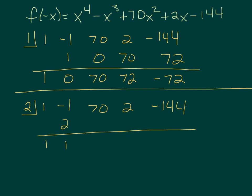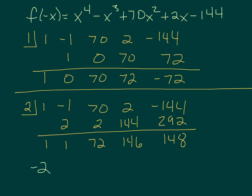Bring down and multiply, add, multiply, add, multiply, add, multiply, add, multiply, and add. Now we have all positives — they're all the same sign. The theorem states that when you do this for the function evaluated at negative x, the result corresponds to the opposite sign, so this tells us that negative 2 is the lower bound. And remember, positive 2 was the upper bound. So all the zeros of the original function are between negative 2 and positive 2.